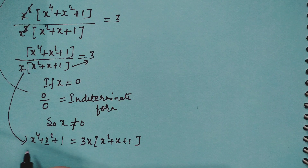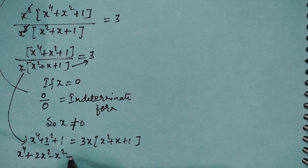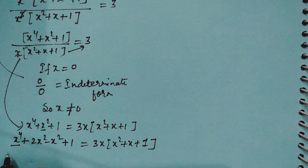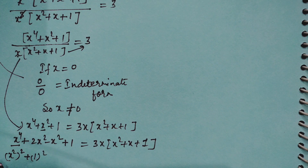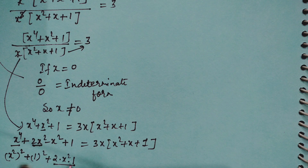To simplify the left side, we rewrite x² as 2x² − x², so x⁴ + x² + 1 becomes x⁴ + 2x² + 1 − x². We recognize x⁴ + 2x² + 1 as (x² + 1)², using the identity a² + 2ab + b² where a = x², b = 1.